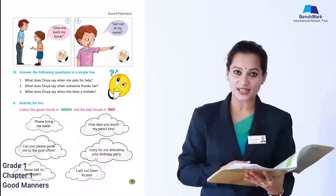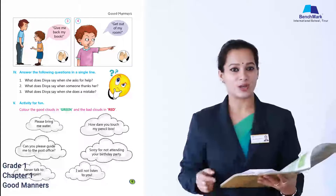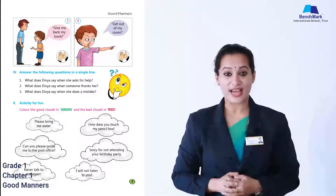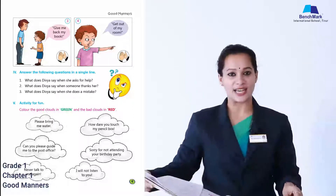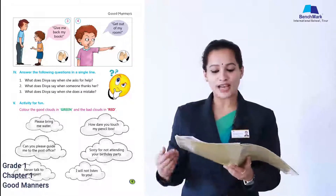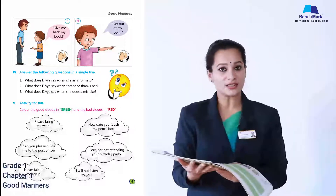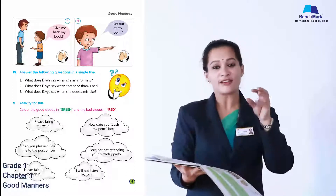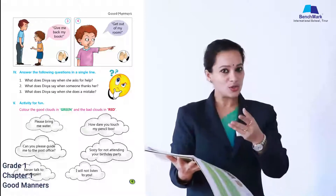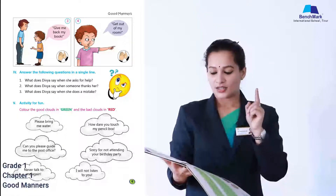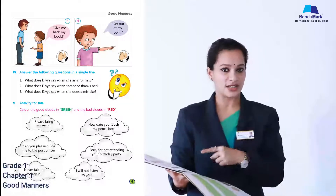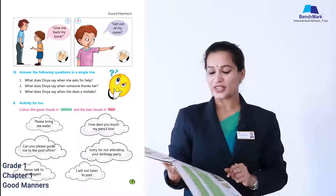Now we go on to the activity for fun, Roman numeral five, on page number nine. Color the good clouds in green and the bad clouds in red. You can see a few clouds with words written in them. If the message is good, color it green; if bad, color it red.